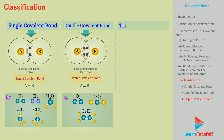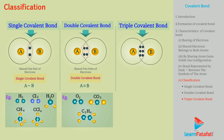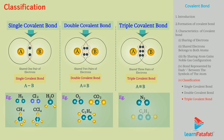Triple covalent bond: the covalent bond formed by sharing of three electrons each, or three pairs of electrons, is called a triple covalent bond. For example, the molecules N2 and C2H2 are formed by triple covalent bond.